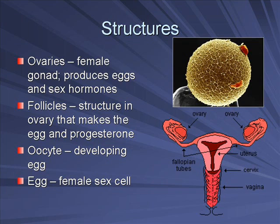The oocyte is just another way of saying a developing egg — not a fully mature egg, but one that's in the process of getting there. The egg is the female sex cell; it has half the number of chromosomes as a typical somatic or body cell. In a human, a normal cell has 46 chromosomes, so a sex cell — the same for males and females — only has half of that: 23. That's because when the egg and the sperm combine, that's how you get half of your DNA from your mom and half from your dad.